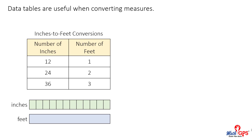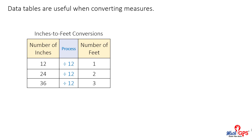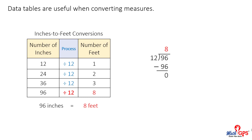What process occurs in this table? If the number of inches is divided by 12, the result is the number of equivalent feet. If we choose to convert 96 inches into feet, what process should be used? Divide 96 by 12 for a quotient of 8. 96 inches is equivalent to 8 feet.